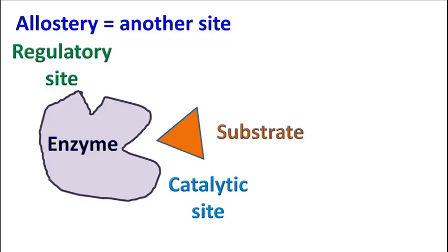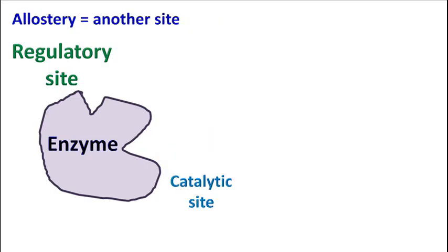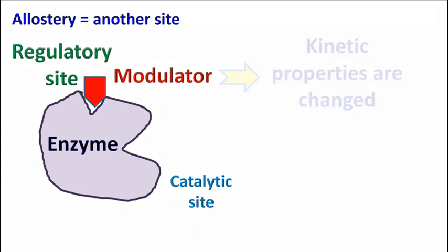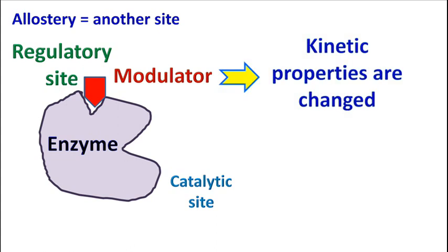The catalytic site is a region where a substrate binds and the substrate gets converted into a product. The regulatory site is a site where a modulator binds. The binding of modulator alters the kinetic property of the enzyme.